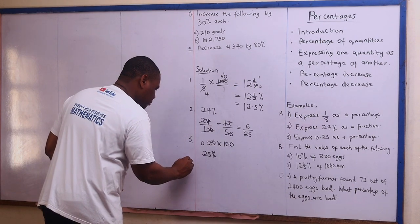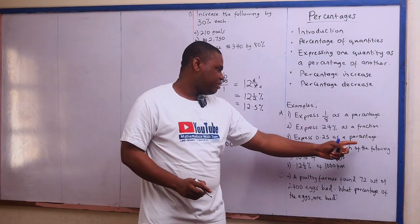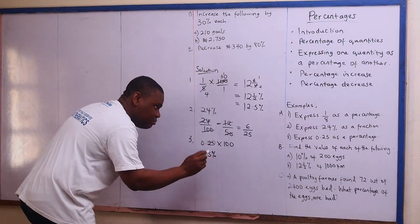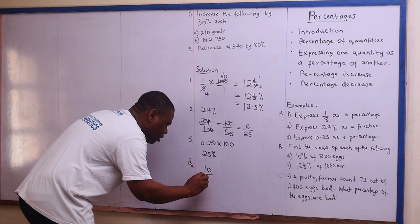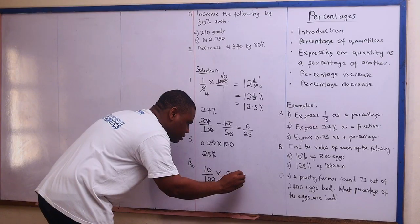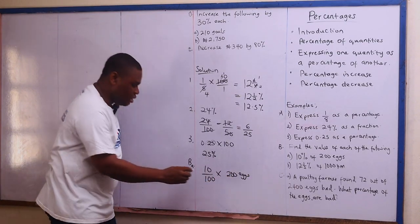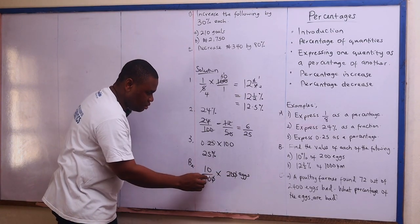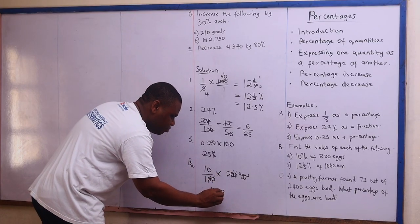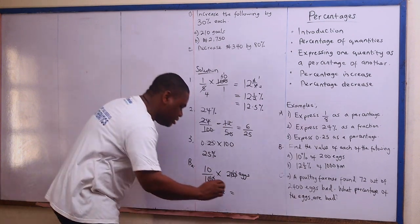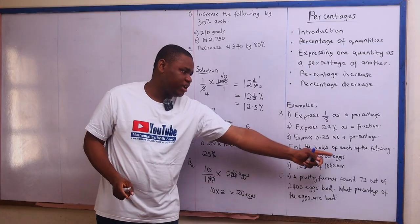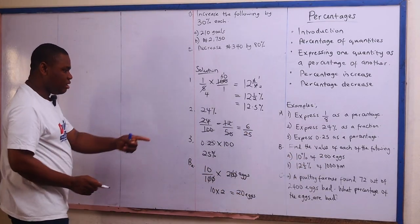Now let's go to part B — find the value of each of the following. First: 10 percent of 200x. That means 10 over 100 times 200x. The zeros cancel, leaving 10 times 2, which gives me 20x. So 10 percent of 200x is 20x.